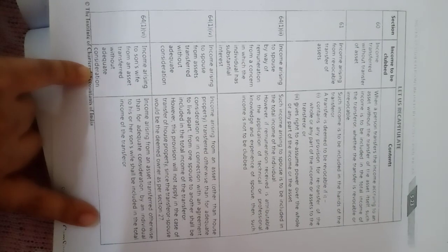According to Section 64(1), income arising to spouse from assets transferred without adequate consideration: suppose the husband transfers some asset to the wife, like a house. In that case, any rent income received from that house property will be considered as the income of the husband, not the income of the wife.